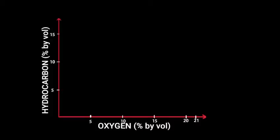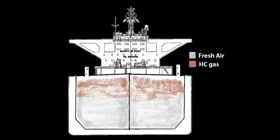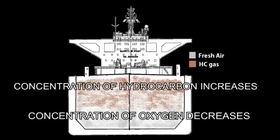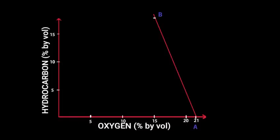Let us take the point where oxygen content is 21% as point A. Let us consider a cargo tank. If we introduce hydrocarbon gas into the tank, the concentration of air that is oxygen decreases. Assuming the tank had fresh air initially.